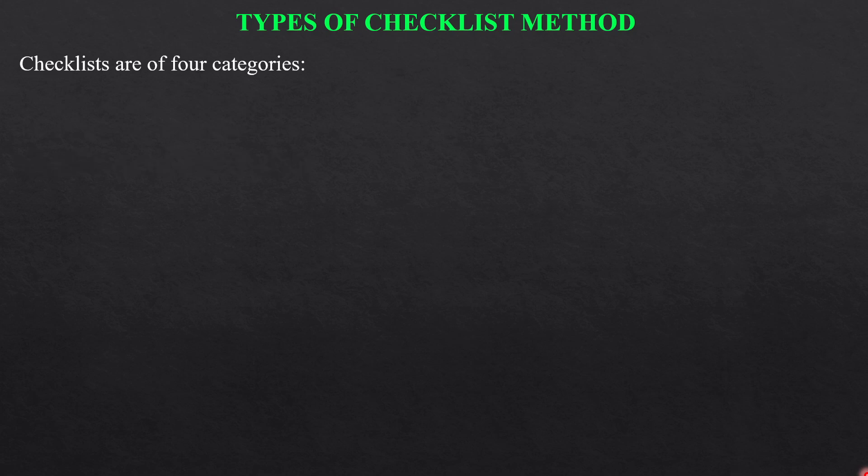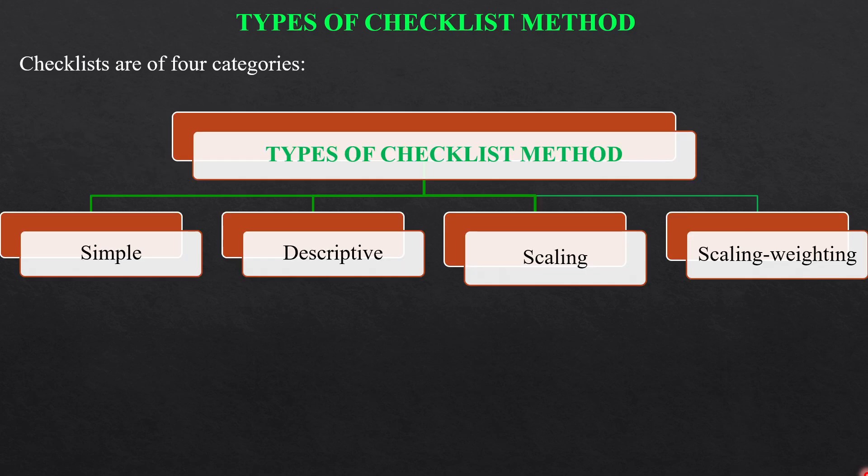Checklist methods are of four categories: simple, descriptive, scaling, and weighting.